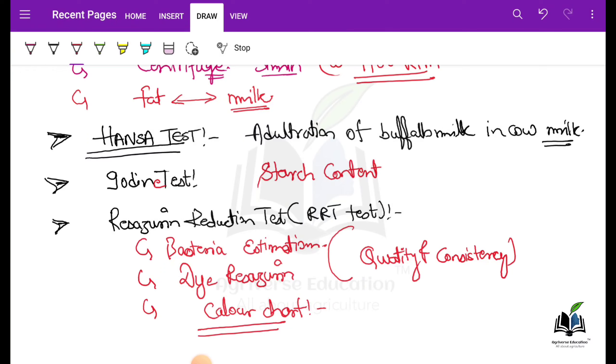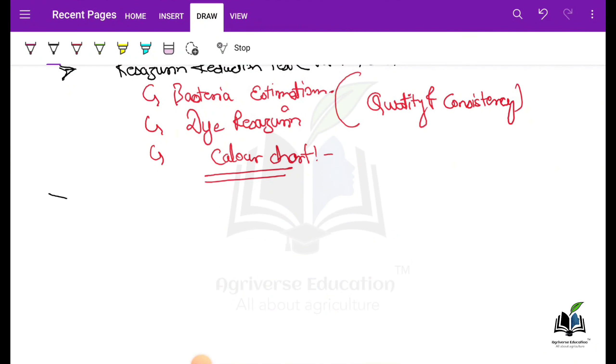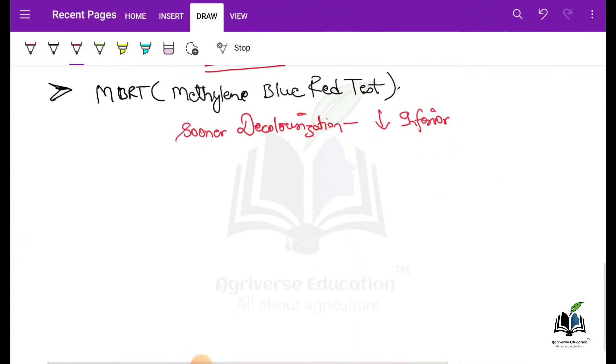And one more test is methylene blue, which we are talking about. In short, MBRT - Methylene Blue Reduction Test. Methylene blue dye is used. This is a categorization. In one column, you have MBRT test, how much time in hours, and category of the milk.